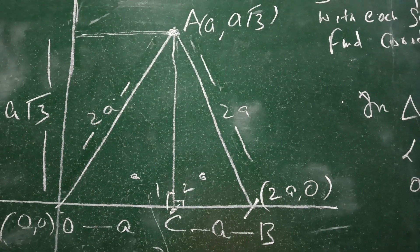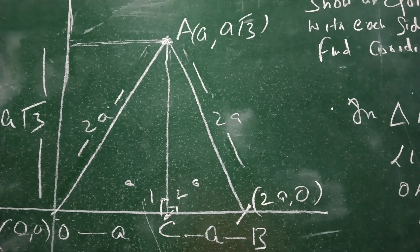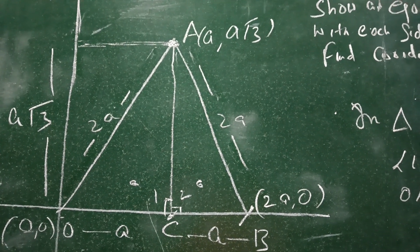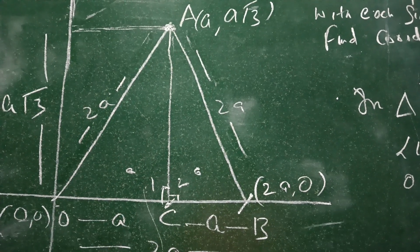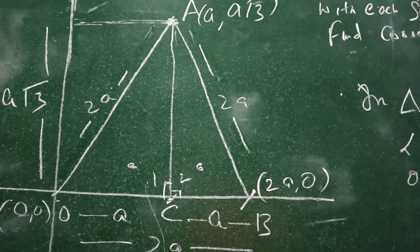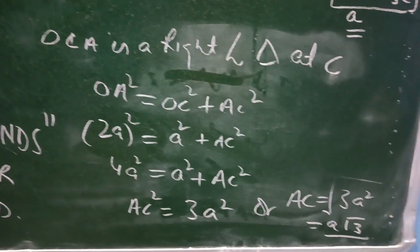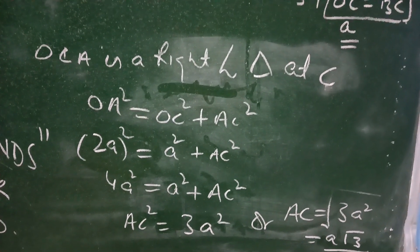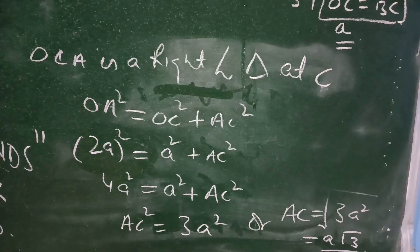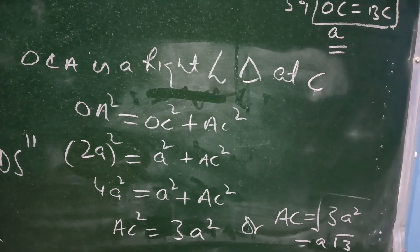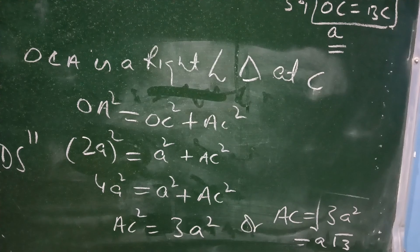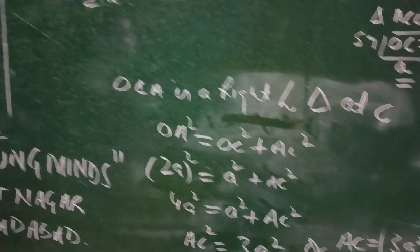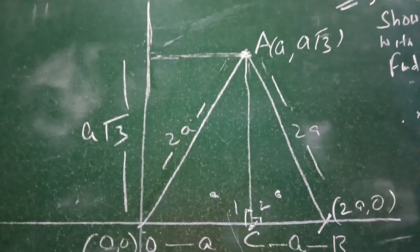And we can write OA² = OC² + AC². So we have (2a)² = a² + AC², which gives AC² = 3a². Therefore, AC = a√3.